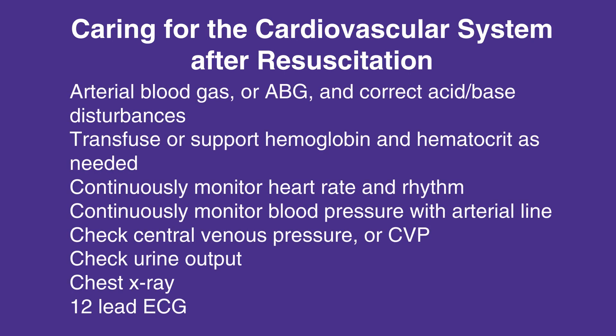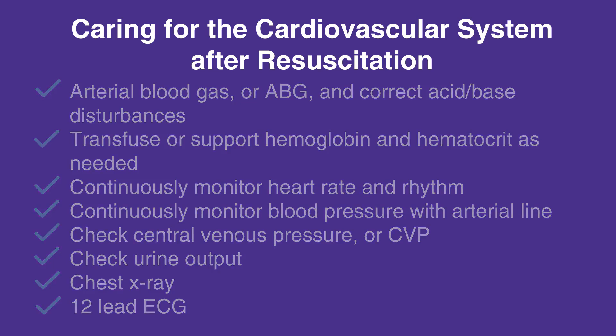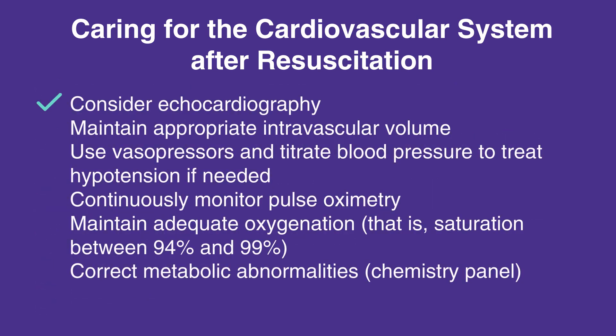When caring for the cardiovascular system after resuscitation, follow this checklist: arterial blood gas, or ABG, and correct acid or base disturbances; transfuse or support hemoglobin and hematocrit as needed; continuously monitor heart rate and rhythm; continuously monitor blood pressure with arterial line; check central venous pressure, or CVP; check urine output; chest x-ray.